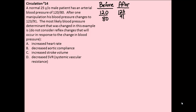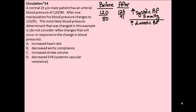Looking at our changes in blood pressures after one manipulation, we've increased the systolic blood pressure by 3 millimeters of mercury and increased the diastolic blood pressure by 11 millimeters of mercury.